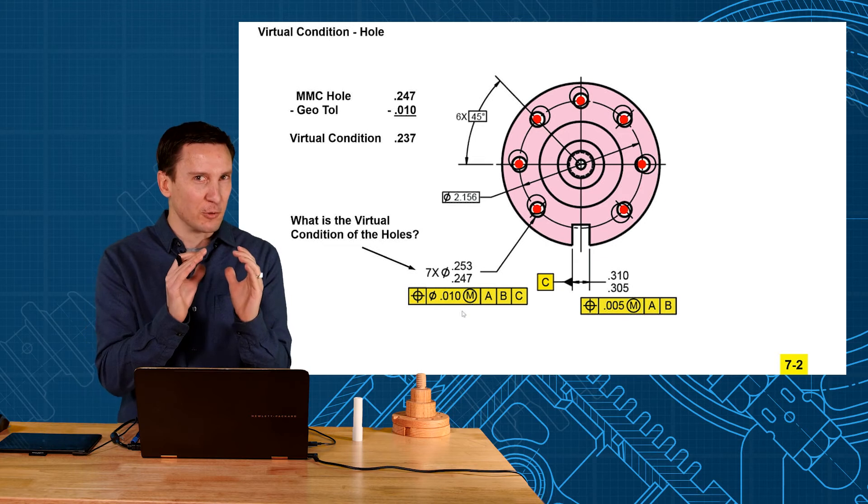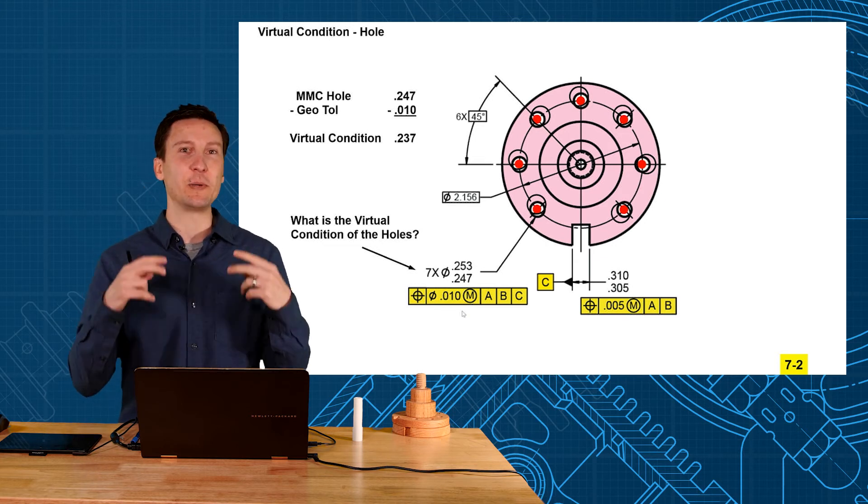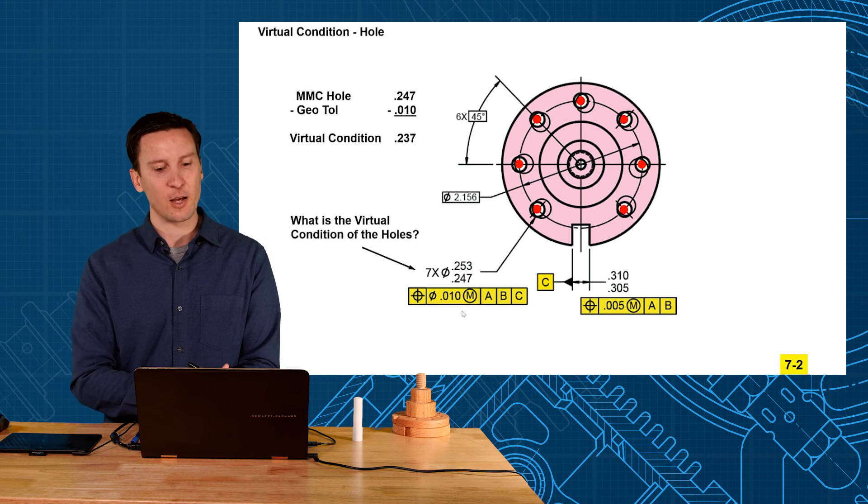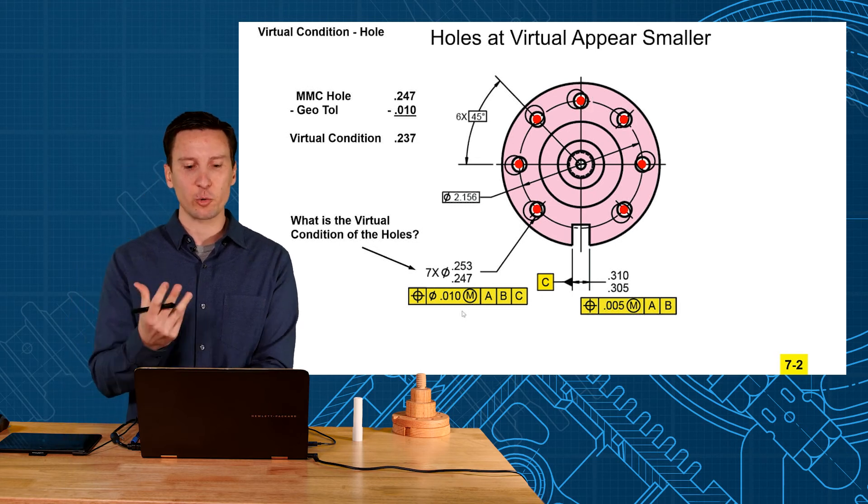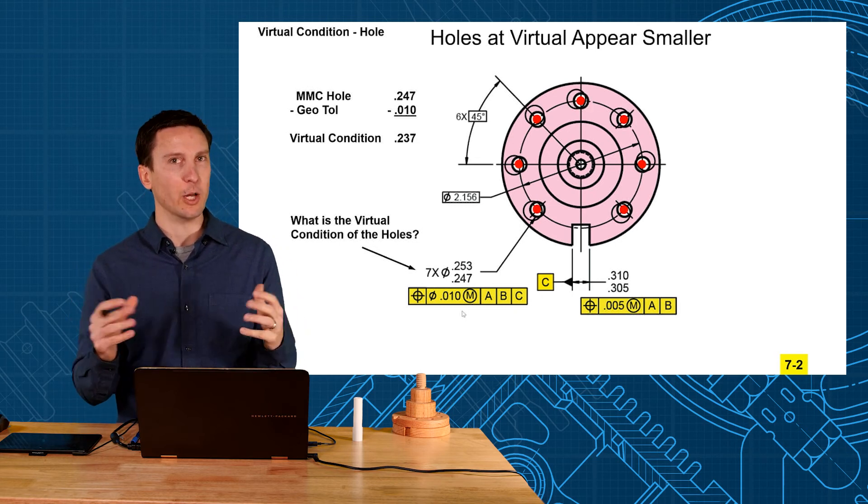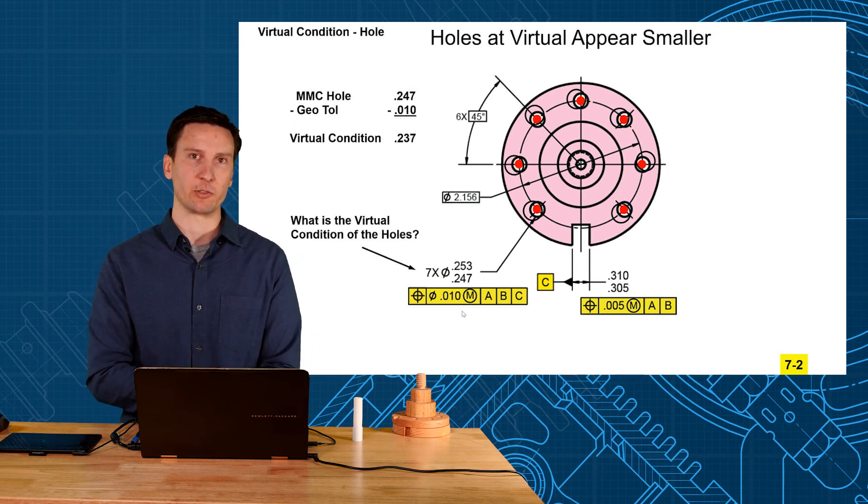So this is my brain thinking that it's just a small hole sitting there at 237. But not really, right? It's just a 247 shifted over. But that's what it appears to look like virtually. So important thing to note here is virtual condition holes appear smaller. You take your smallest hole, subtract that geometric tolerance.